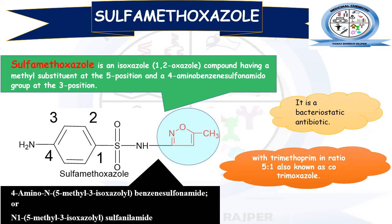The chemical IUPAC name for Sulphamethoxazole is 4-amino-N-(5-methyl-3-isoxazolyl)-benzenesulfonamide, meaning the heterocyclic isoxazole ring is fused or bonded with sulphanilamide at the third position. It can also be named as N1-(5-methyl-3-isoxazolyl)-sulphanilamide.